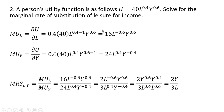Problem two: A person's utility function is given. We want to solve for the marginal rate of substitution of leisure for income. We solve for the marginal utility of leisure by taking the partial derivative of the utility function with respect to l. We take the exponent 0.4, move it down in front, then subtract 1 from the exponent on the l term. Simplifying: 0.4 times 40 is 16, and l to the 0.4 minus 1 is l raised to the minus 0.6 power. That is the marginal utility of leisure.